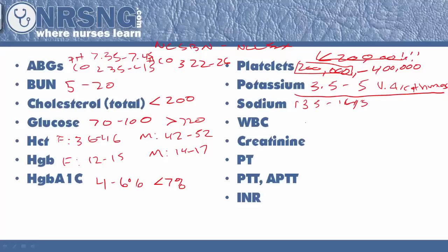For white blood cells, the number I'd like you to know is about 5,000 to 10,000. The question you're most likely going to get is about a leukemic patient who has low WBCs. Of course, elevated white blood cell count indicates infection. For creatinine, the number I'd like you to know is 0.6 to 1.2.